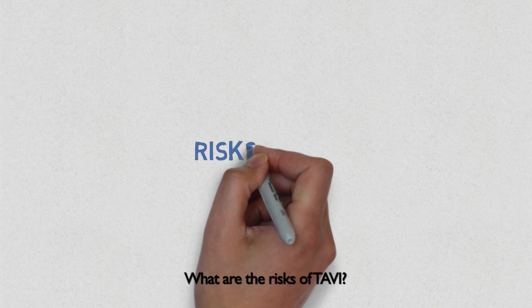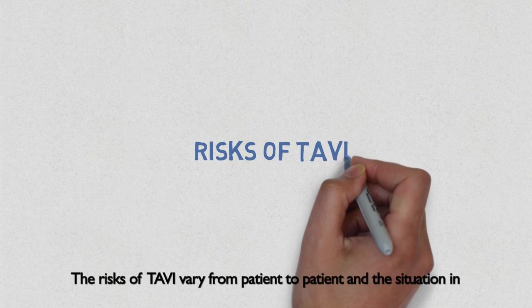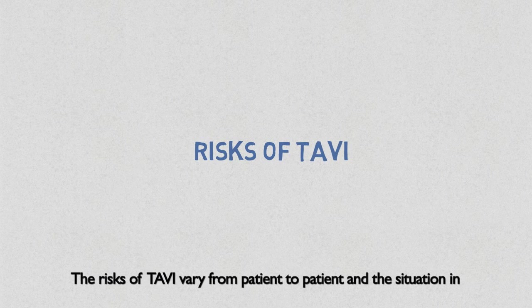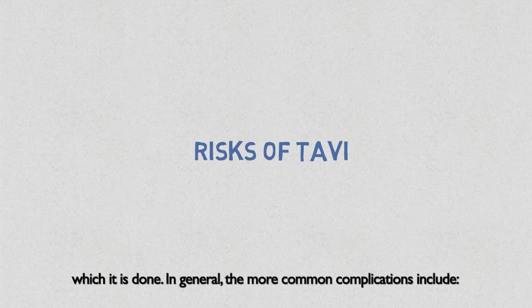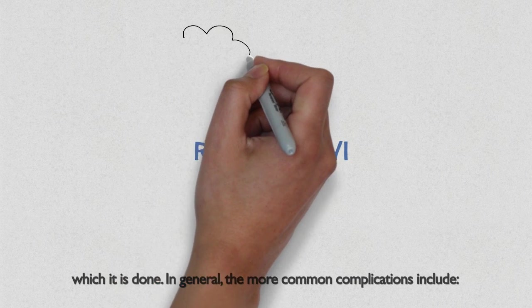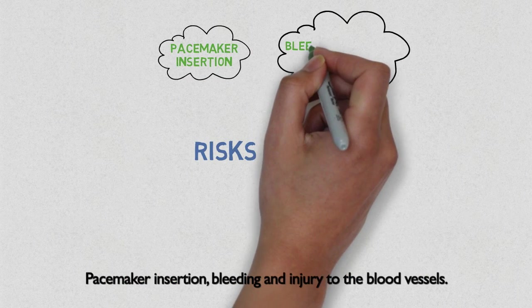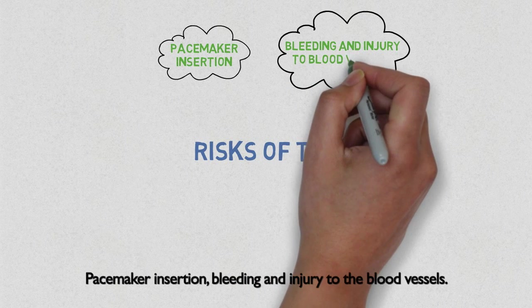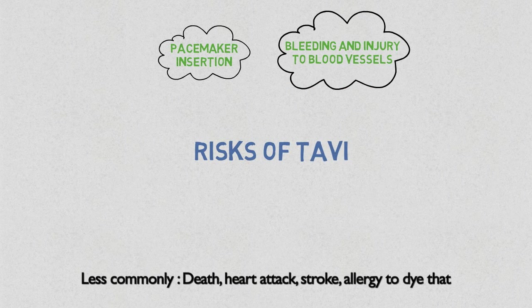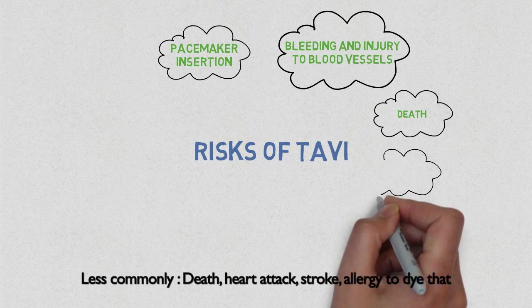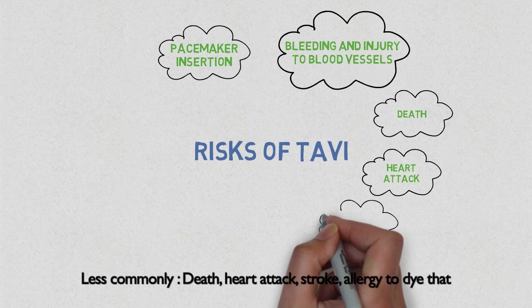What are the risks of TAVI? The risks of TAVI vary from patient to patient and the situation in which it is done. In general, the more common complications include pacemaker insertion, bleeding and injury to the blood vessels. Less commonly, death, heart attack, and stroke.